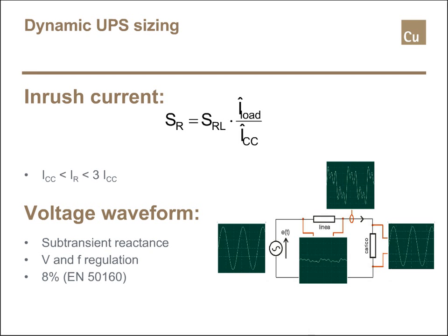Typically, a dynamic UPS is able to provide 300% of its rated current, and this is more or less the limit to be considered.